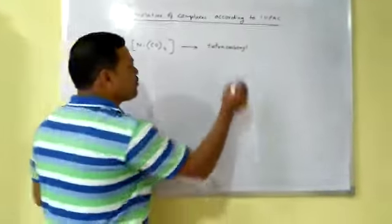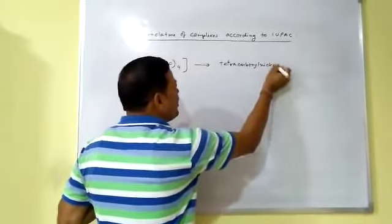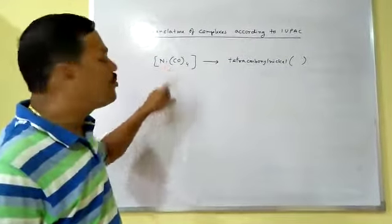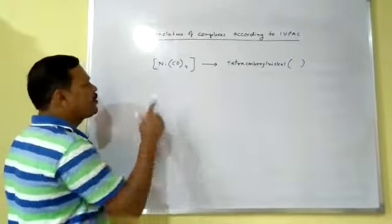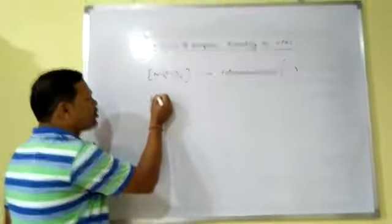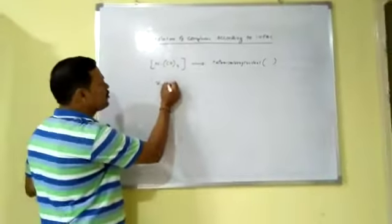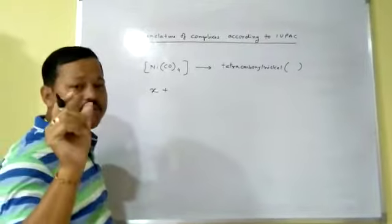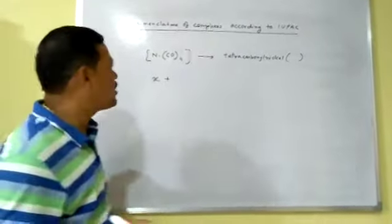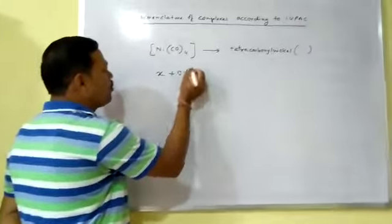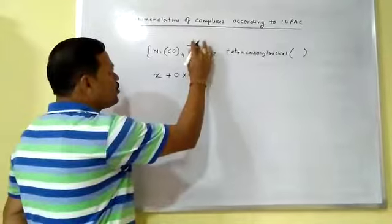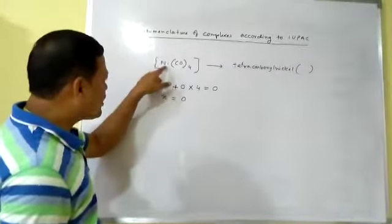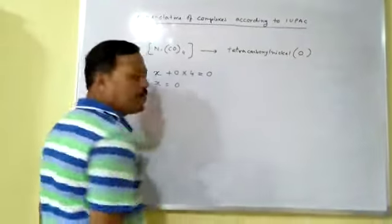What is the metal here? Nickel. So we write tetracarbonyl nickel. In brackets, you have to write the oxidation number of nickel, i.e., the charge of nickel. Suppose nickel's oxidation number is X. Carbon monoxide is a neutral compound — carbonyl has no charge, as shown in the table. So X + (0 × 4) = 0, which means X = 0. The charge of nickel is 0 here, so you write 0 — no charge present.